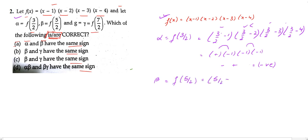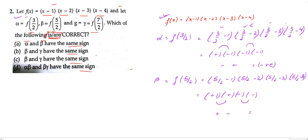For beta = f(5/2), we get (5/2−1)(5/2−2)(5/2−3)(5/2−4). The signs are: positive, positive, negative, negative. Positive × positive = positive, negative × negative = positive, so positive × positive gives a positive result. Beta is positive.